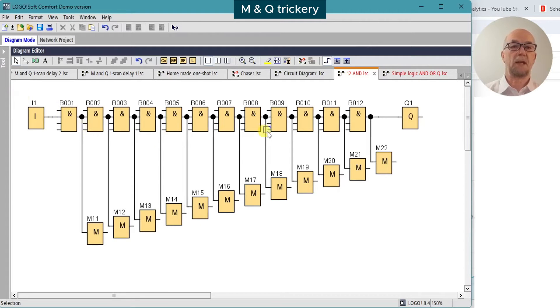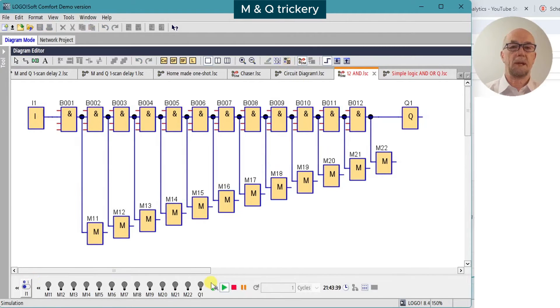In this example, we have an input fed through a chain of 12 AND gates turning on output Q1, and we're using markers or flags to monitor the status of all the outputs so they show up on the simulation taskbar. We turn on the input, turn off the input, and observe that all the M relays on the status bar turn on and off simultaneously.